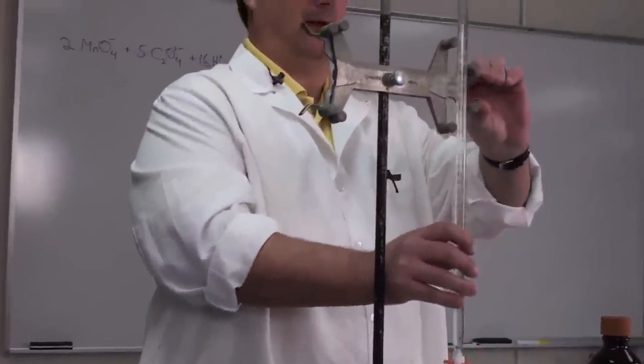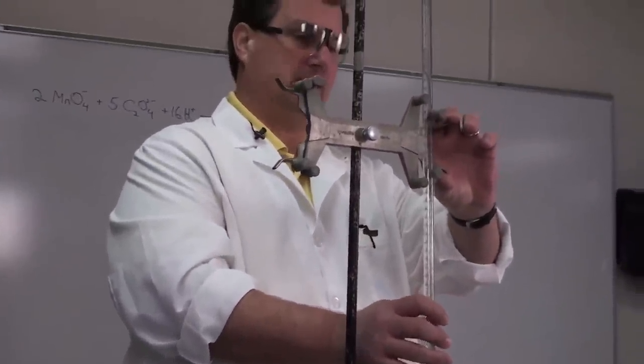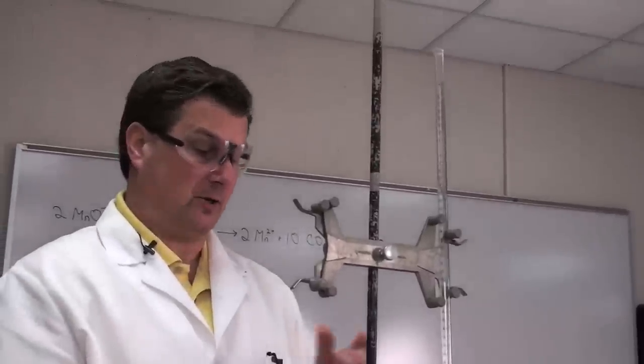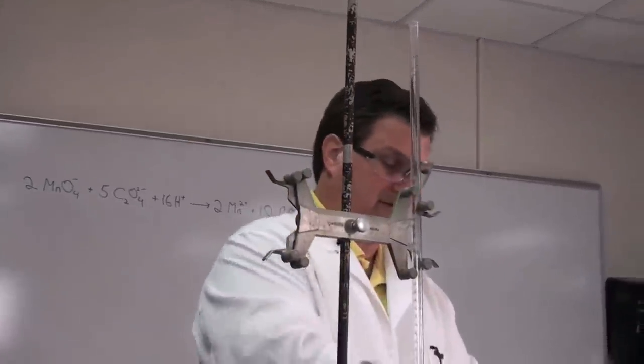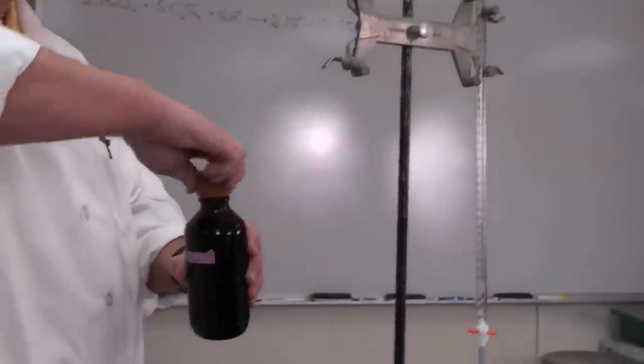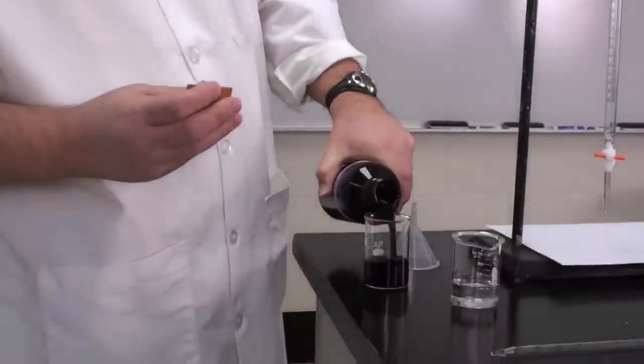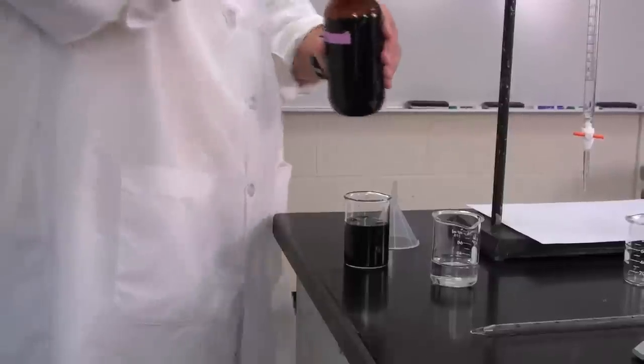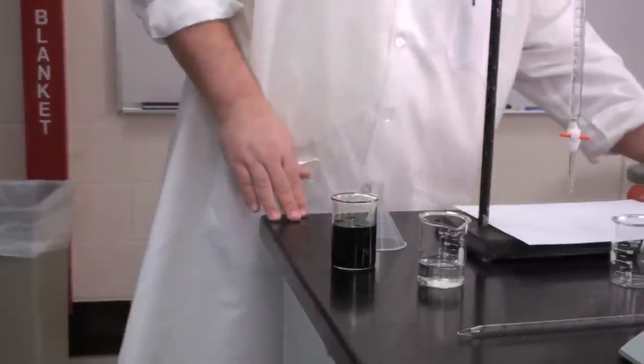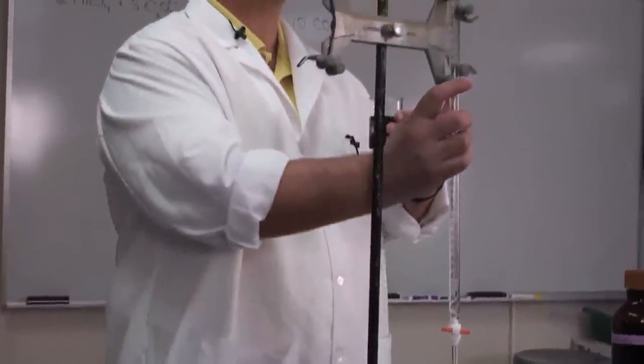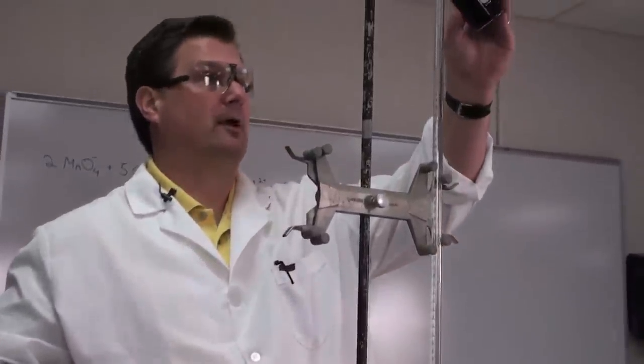Putting solutions into a burette—different people do it different ways. If you have a very steady hand, you can pour it directly in. Some people like to use a funnel. I'll show you the way I like to do it. Again, we'll get a little bit of this stuff and put it into a separate beaker. It's much easier to pour out of a beaker. If you have a steady hand, and I like to think mine is somewhat steady, you can just pour it straight in.